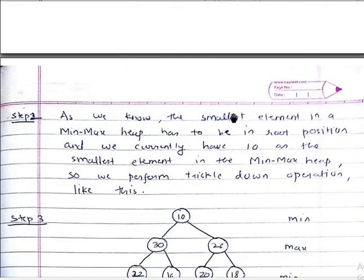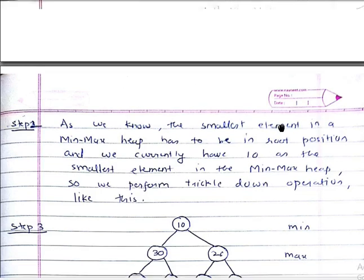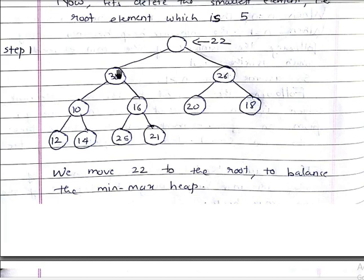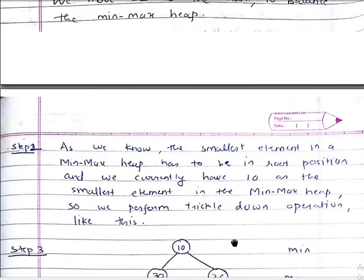Now step two: as we know, the smallest element in the min-max heap after deletion has to be in the root position — no matter whether it is after deletion or before deletion, it has to be the smallest element. Currently we have 10 as the smallest element in the min-max heap. So we perform a trickle-down operation. After deletion, 10 is the smallest number in the whole min-max heap.